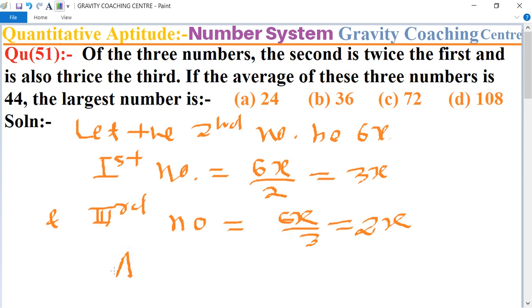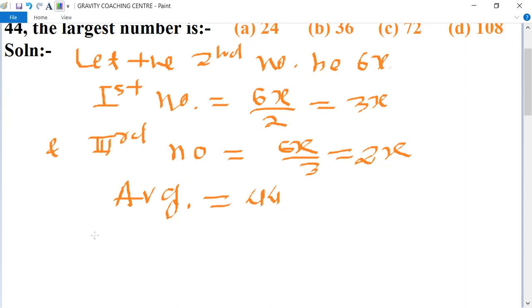And the average of these numbers is given as 44. So 6x plus 3x plus 2x upon 3 equals 44.